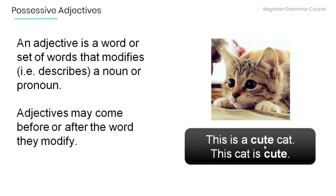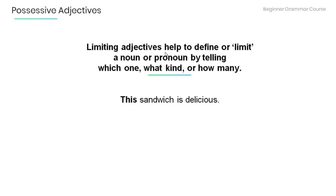In 'This is a cute cat,' the adjective 'cute' comes before the noun. In the sentence 'This cat is cute,' the adjective 'cute' again modifies the noun 'cat' but comes after it. Now, limiting adjectives help to define or limit a noun or pronoun by telling which one, what kind, or how many. For example, 'This sandwich is delicious' — 'this' is a limiting adjective telling us which sandwich is delicious.